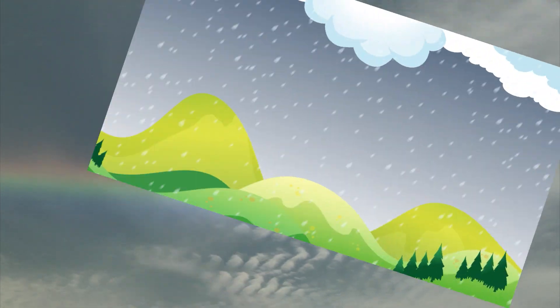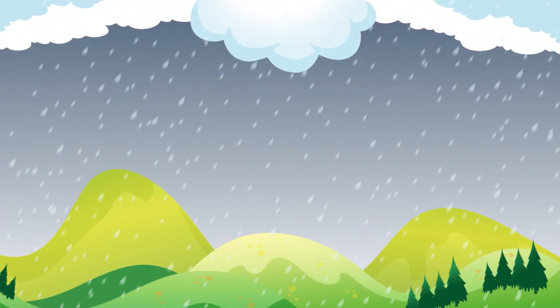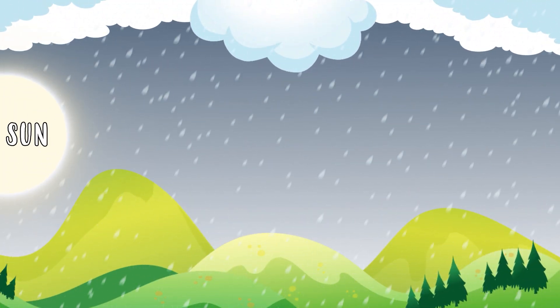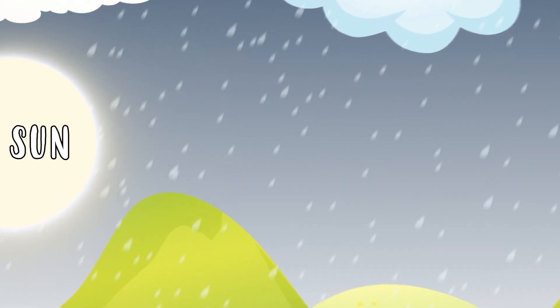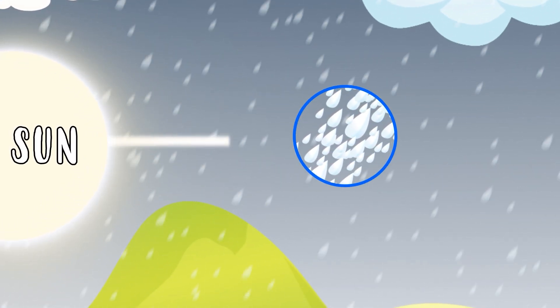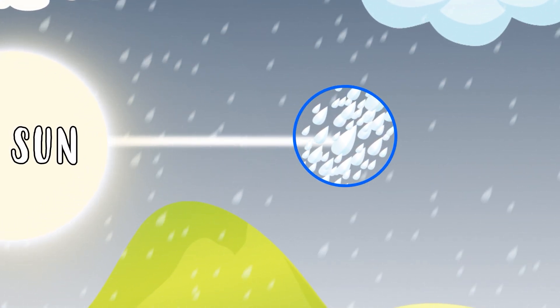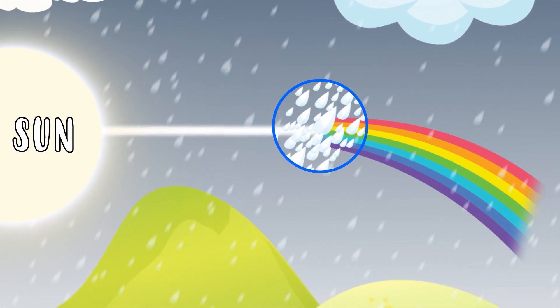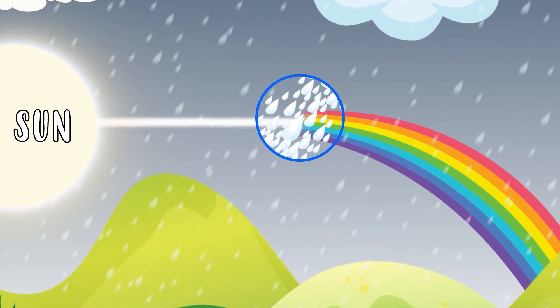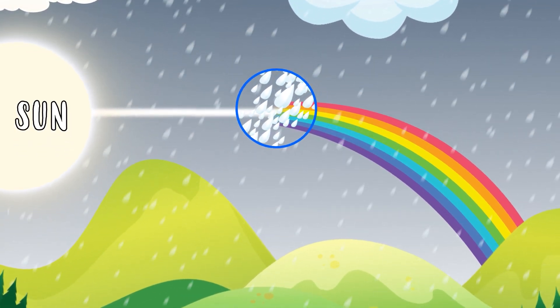This also happens when rain coincides with the sun. Sunlight, on its journey to Earth, needs to pass through the rain droplets, and this is when the seven colours are dispersed, forming a rainbow.